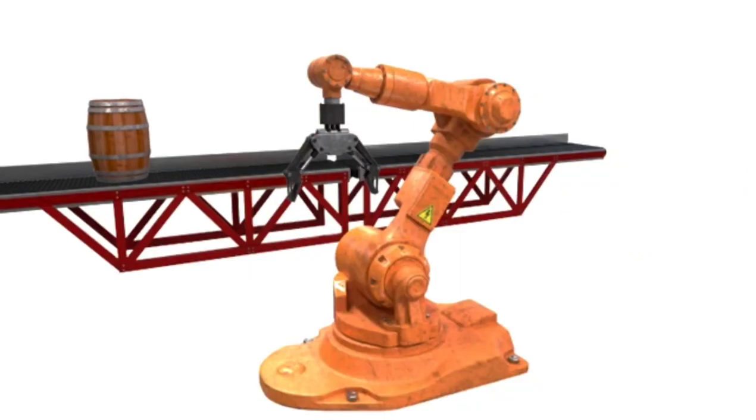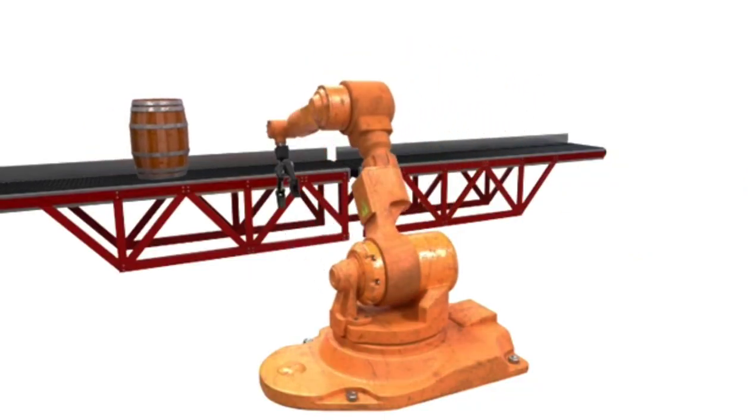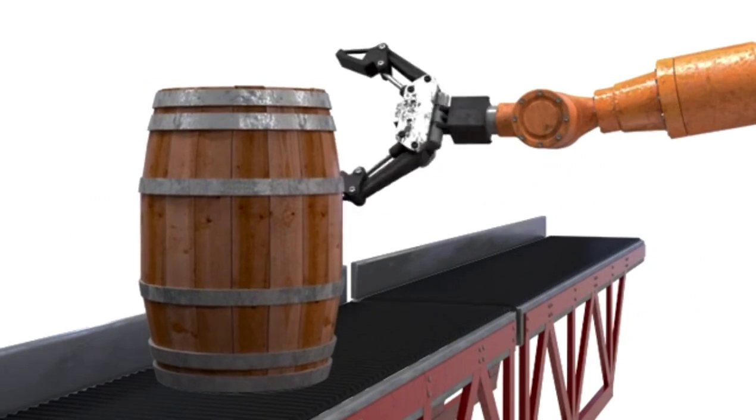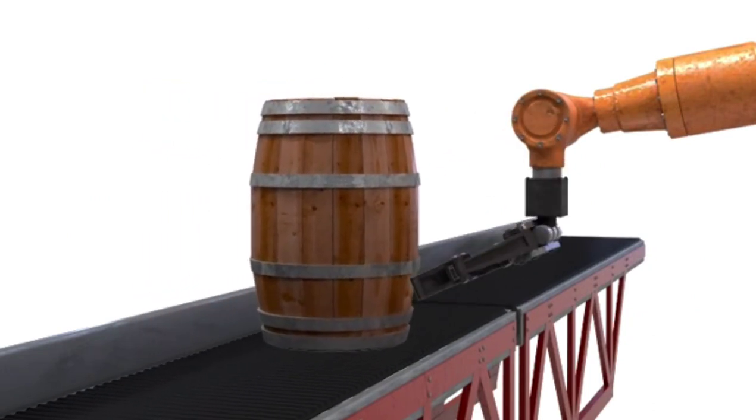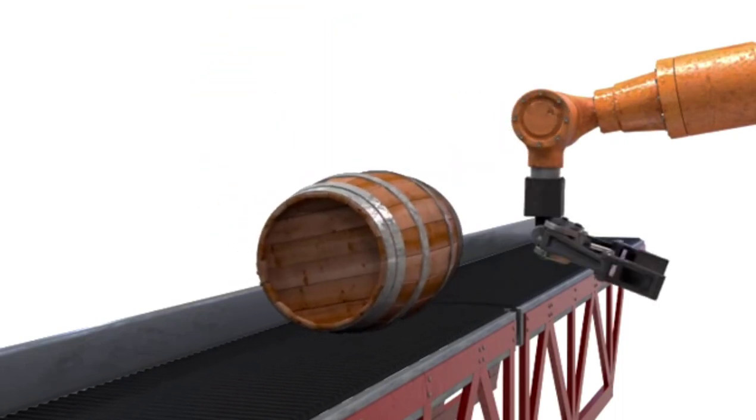The position axes movement at the waist, shoulder and elbow, along with the orientation axes movement of pitch, roll and yaw, allow the robot to accomplish its tasks within the work envelope.